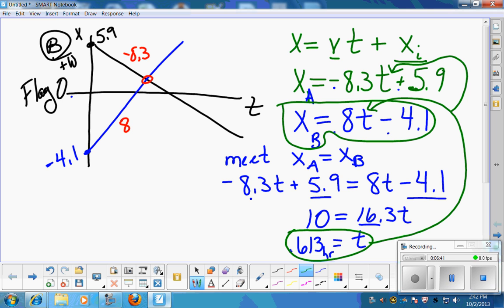I think I'll just plug it back into this one. So, I'm going to take my 0.613, multiply it by 8, and then subtract the 4.1. And I end up with a position for object B of 0.81. And that should be in kilometers. And that's going to be the solution to the problem because that tells you where they are.